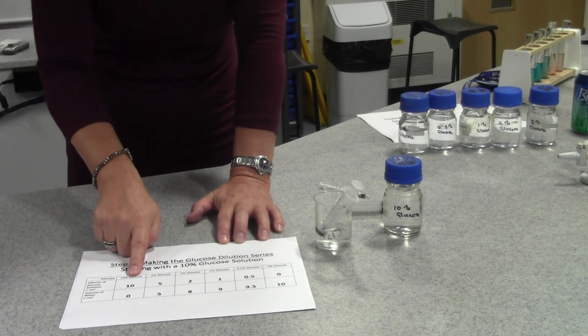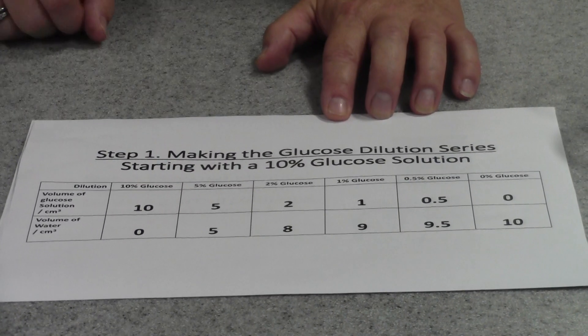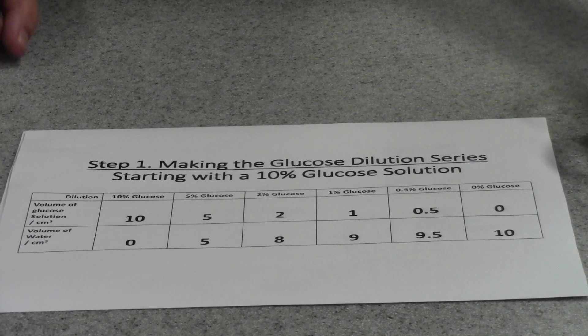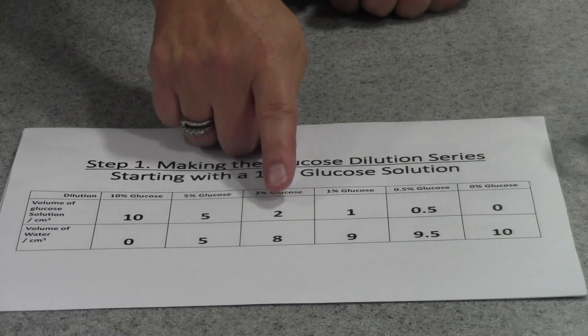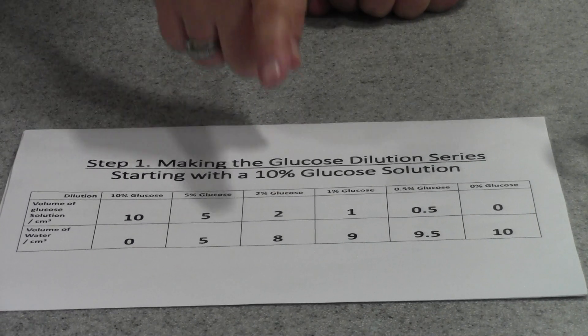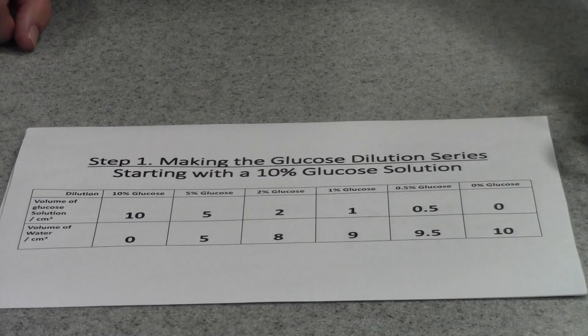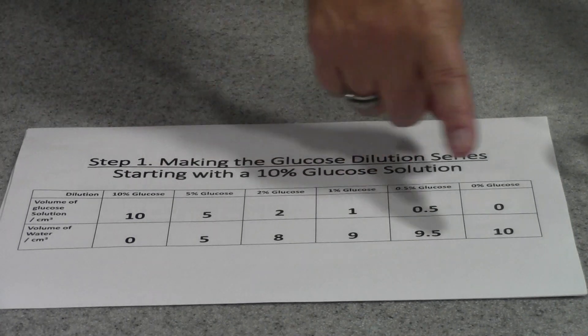For example, the 10% glucose is already prepared. If we want to make a 5% glucose solution, we would simply use 5 centimeters cubed of the 10% mixed with 5 centimeters cubed of distilled water. If we want to make a 2% glucose solution, it would be 2 centimeters cubed of the 10% glucose solution with 8 centimeters cubed of distilled water, and so on.